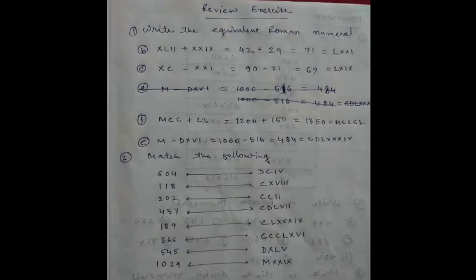Number b: XLII plus XXIX. XLII means 42 plus 29 equals 71, which is LXXI. Number c: XC minus XXI. XC means 90, XXI means 21, 90 minus 21 is 69.